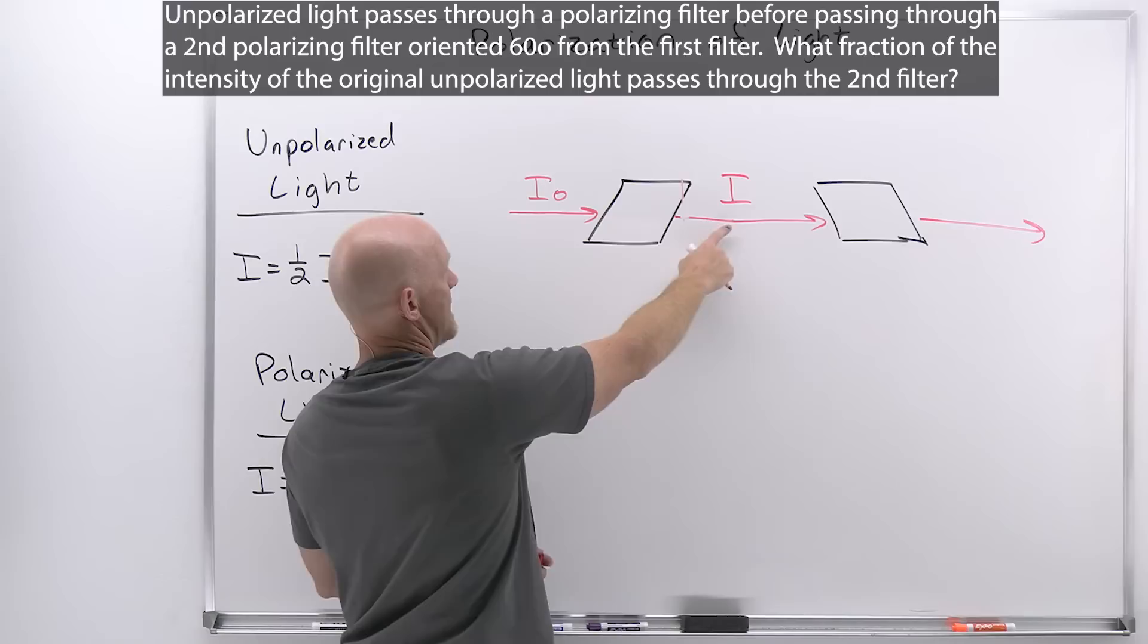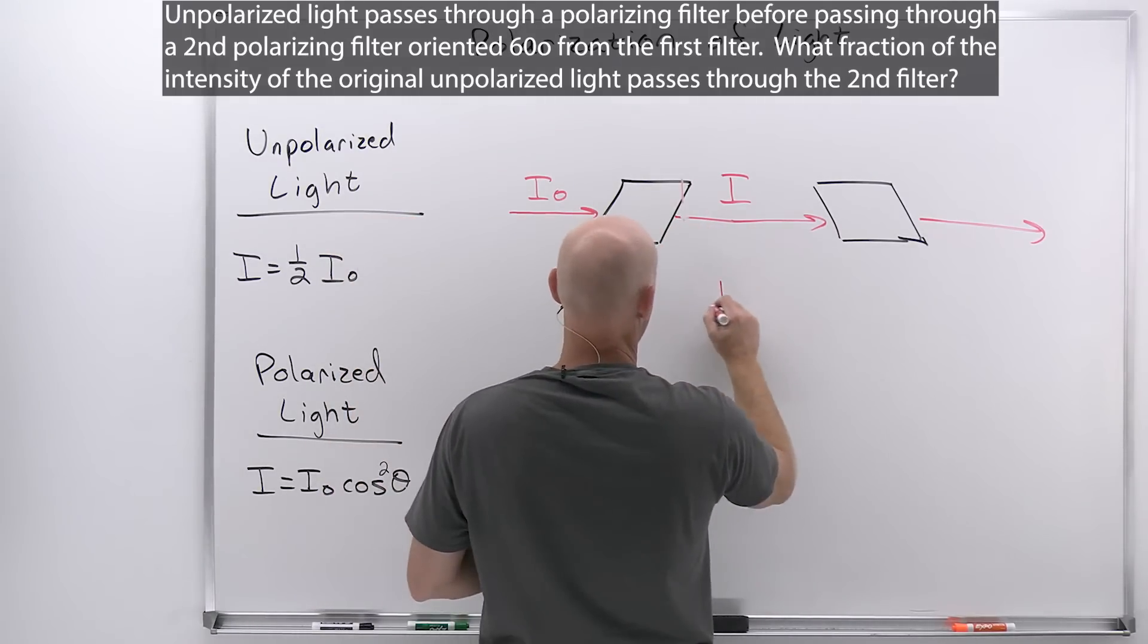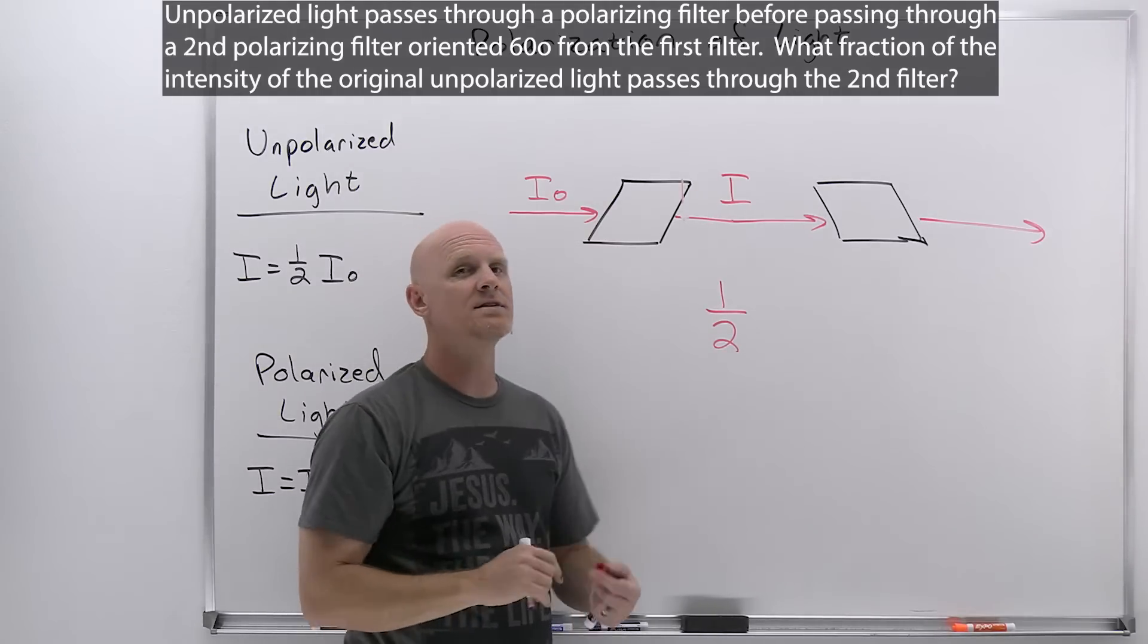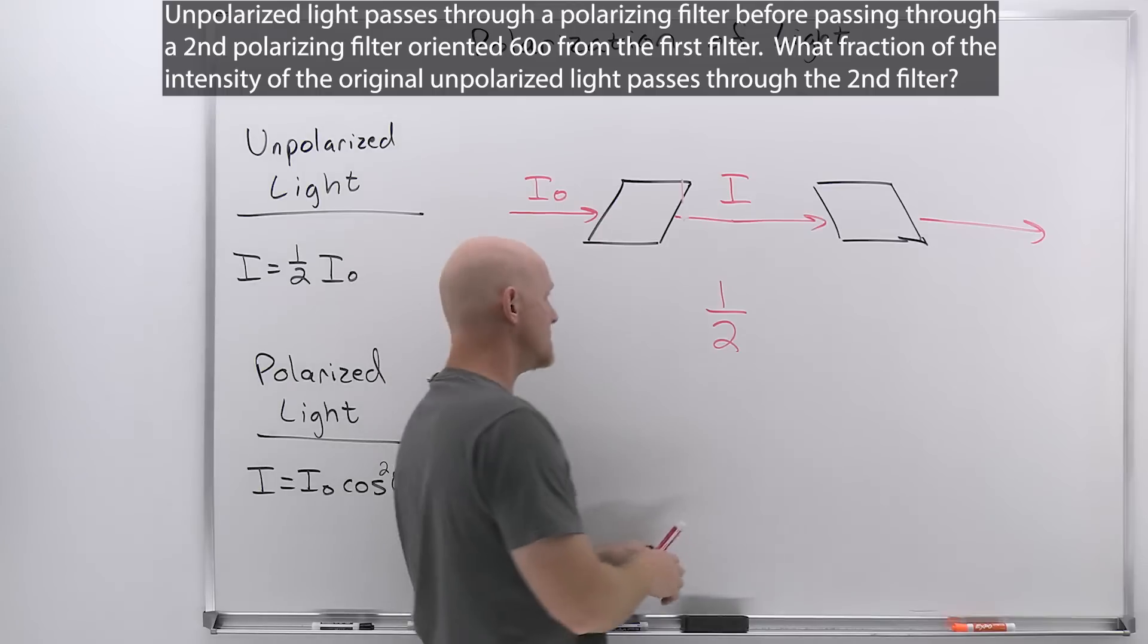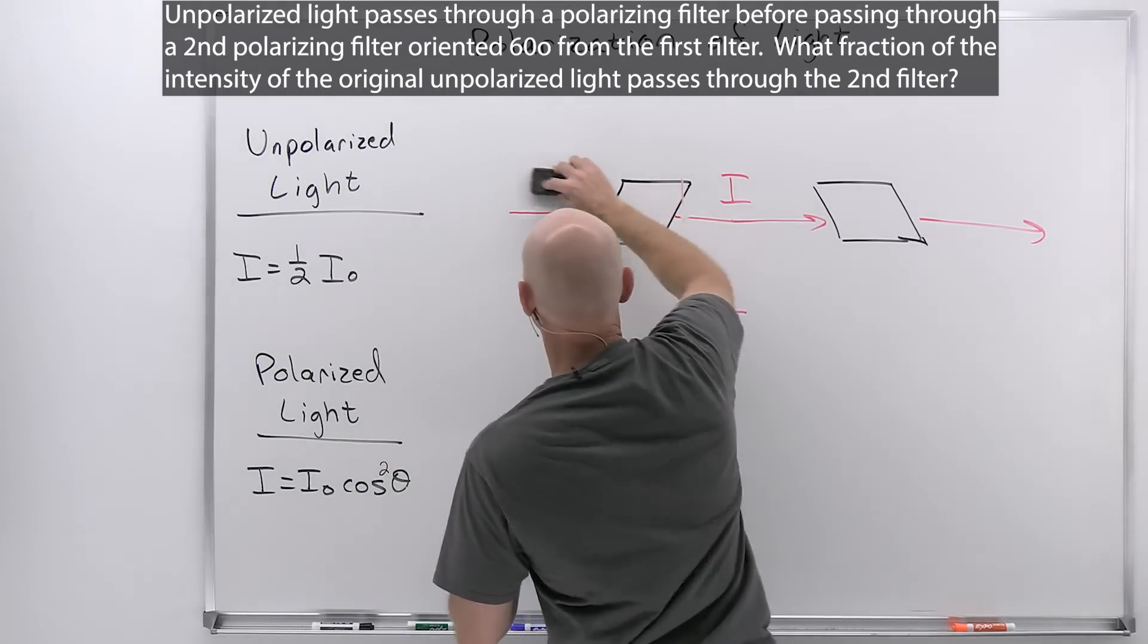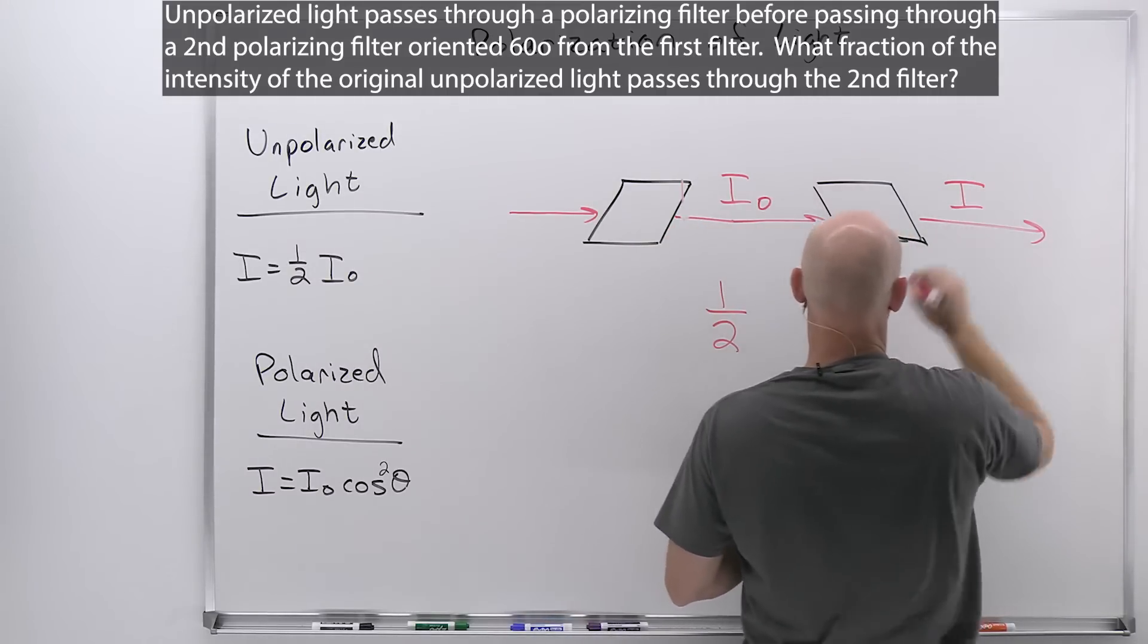The first part is just dealing with polarizing unpolarized light. In this case, the relationship between I and I₀ is just this one here again, and so the amount that makes it through is half the original incident intensity. So that's half the equation.